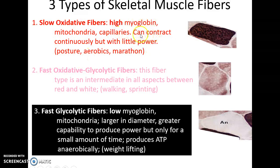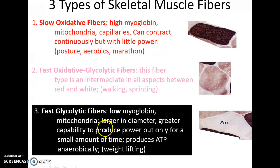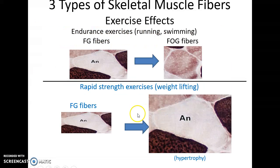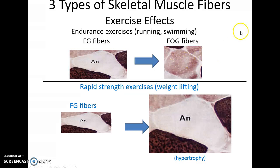The three main types of skeletal muscle fibers: slow oxidative fibers are reddish in color, have lots of myoglobin, ATP, mitochondria, and capillaries — they can contract continuously but don't produce a lot of power. Fast oxidative glycolytic fibers are pinkish, an intermediate type — they can make stronger contractions for a bit longer, but not as continuously as slow oxidative fibers. Fast glycolytic fibers are white with very low myoglobin, low ATP, and large diameter — they produce a lot of force but only for a short period and then need rest.